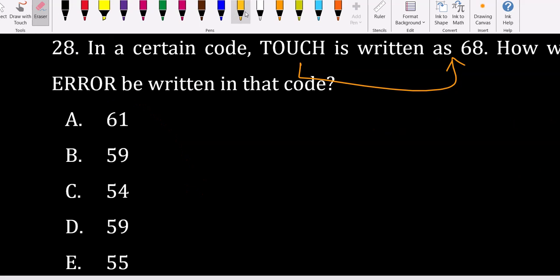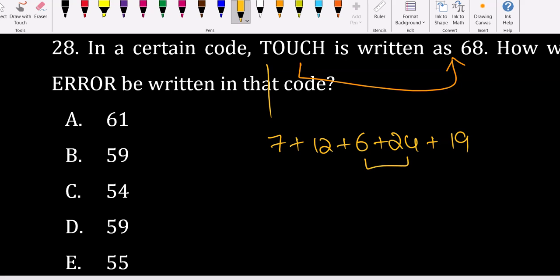If you go with reverse code: T is 7, O is 12, U is 6, C is 24, H is 19. That's 7 plus 12 plus 6 plus 24 plus 19, which equals 68. Perfect! This matches.